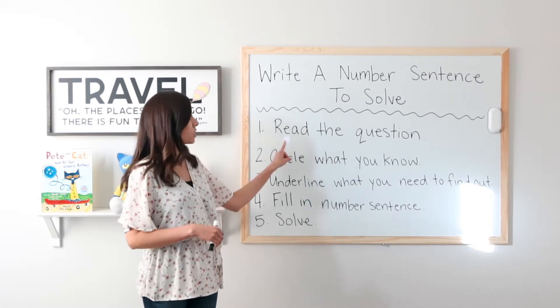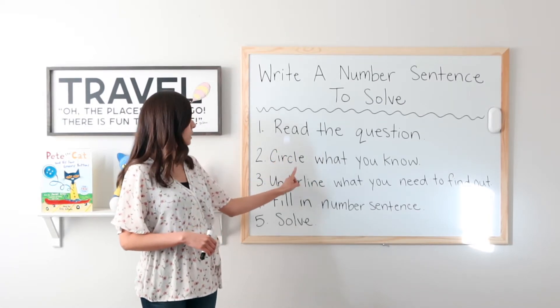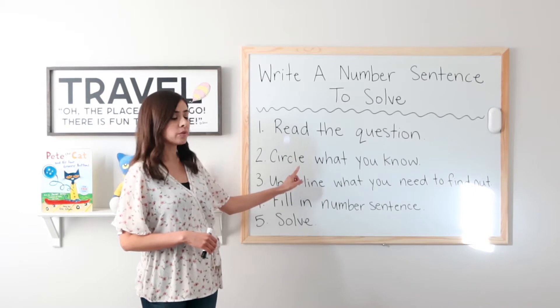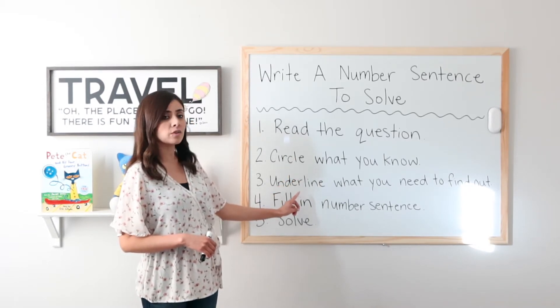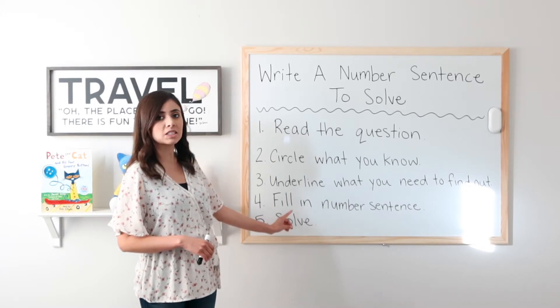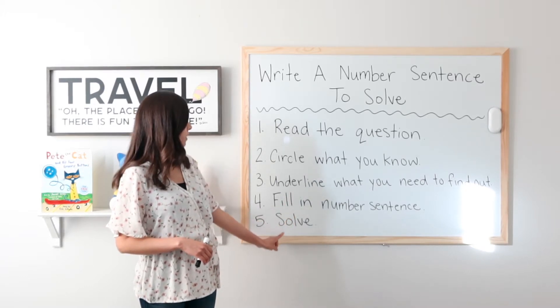First, read the question. Second, circle what you know. Third, underline what you need to find out. Fourth, fill in the number sentence. And five, solve.